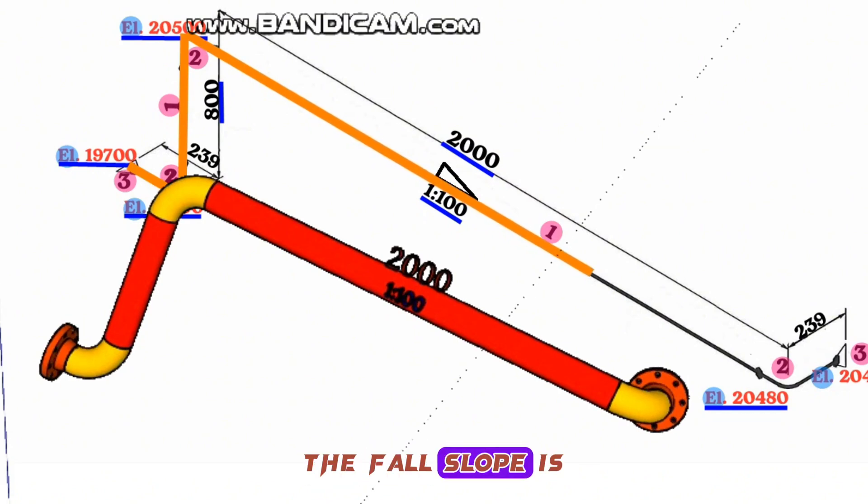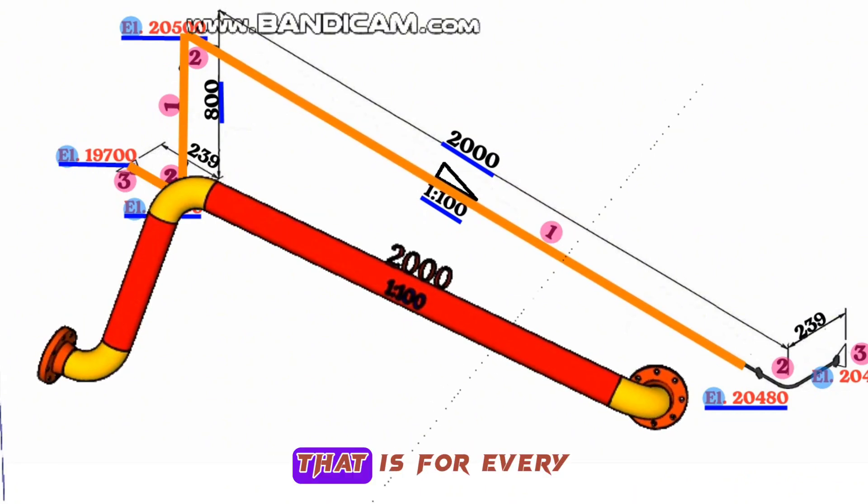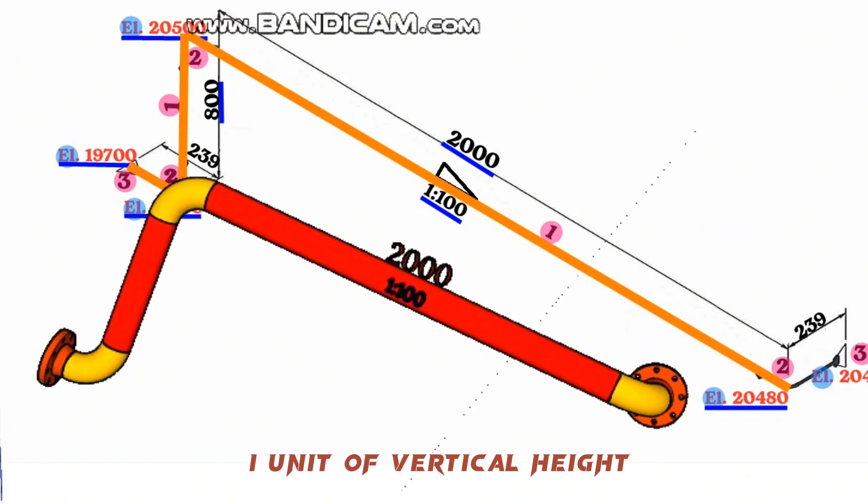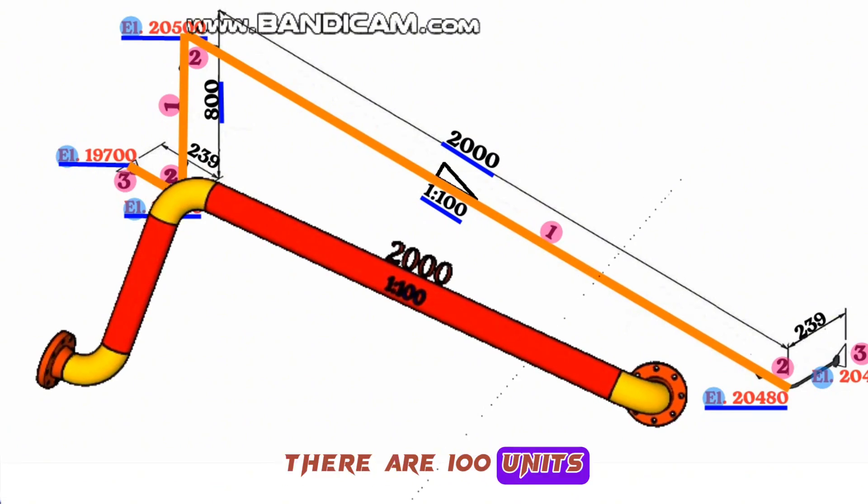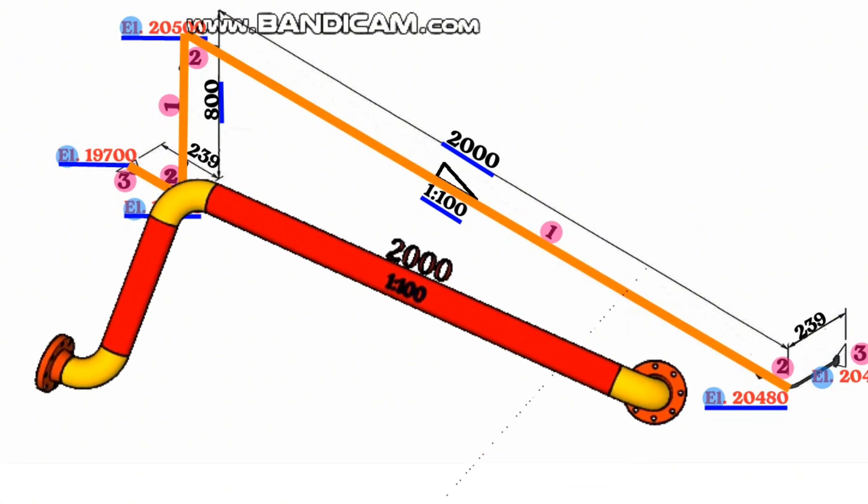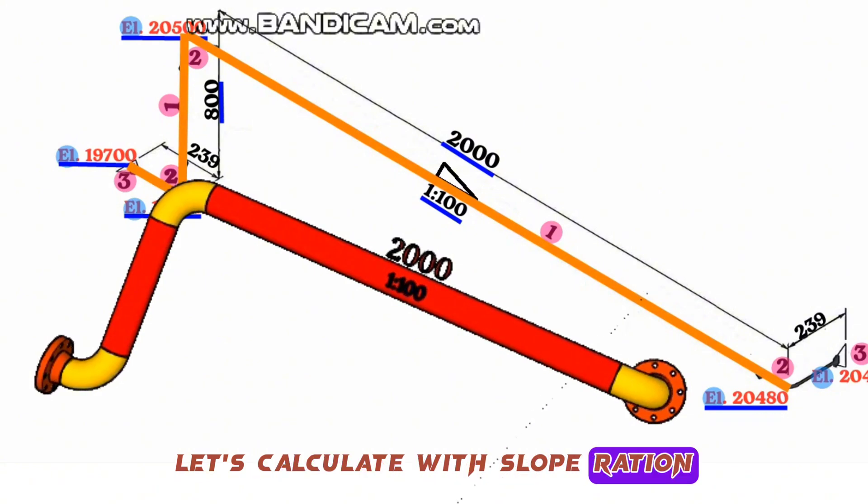The fall slope is expressed as a ratio of 1 to 100, that is, for every 1 unit of vertical height, there are 100 units of horizontal distance. Let's calculate with slope ratio in this example.